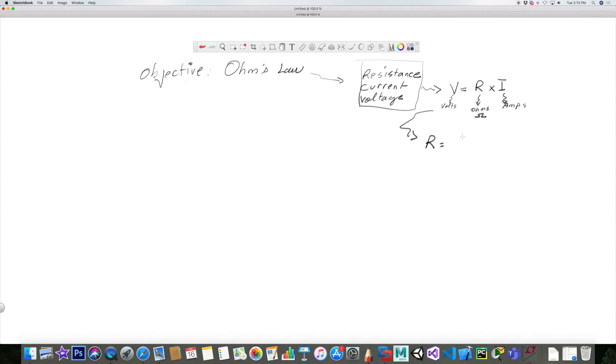R equals V divided by I, right? And if you want to extract I out of this, then I equals V divided by R. So you've got this main formula, and then this one, and then this one.